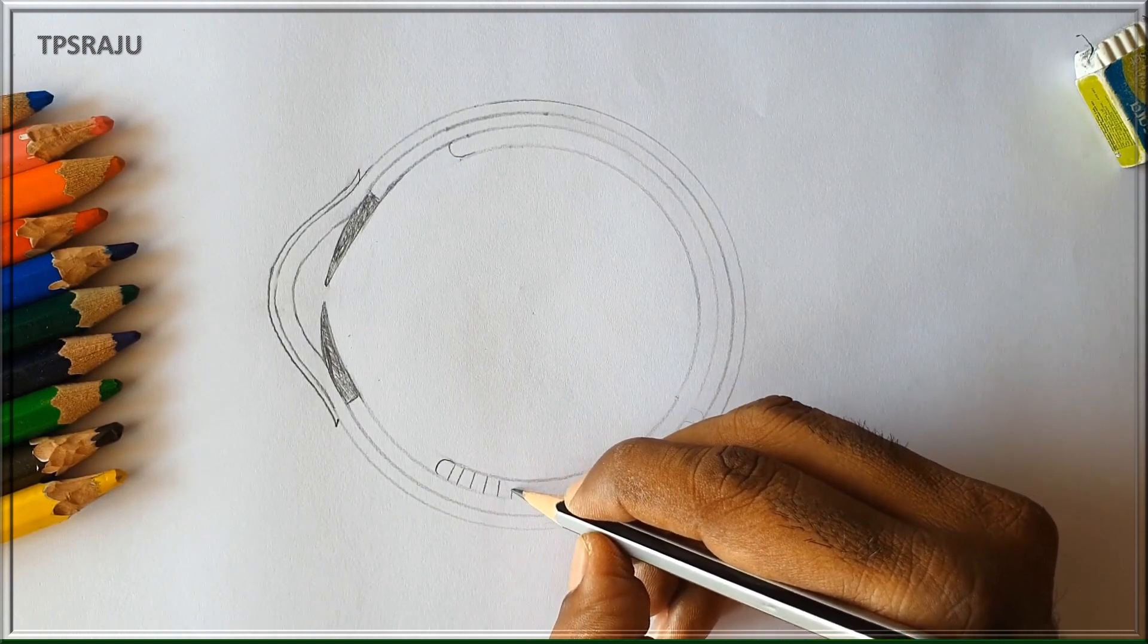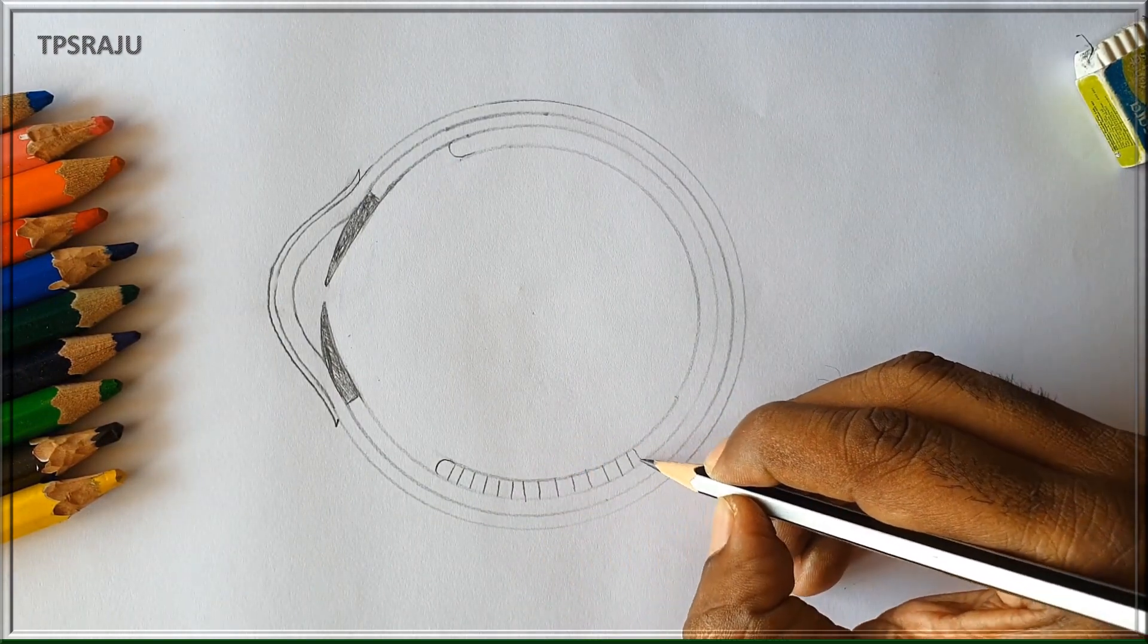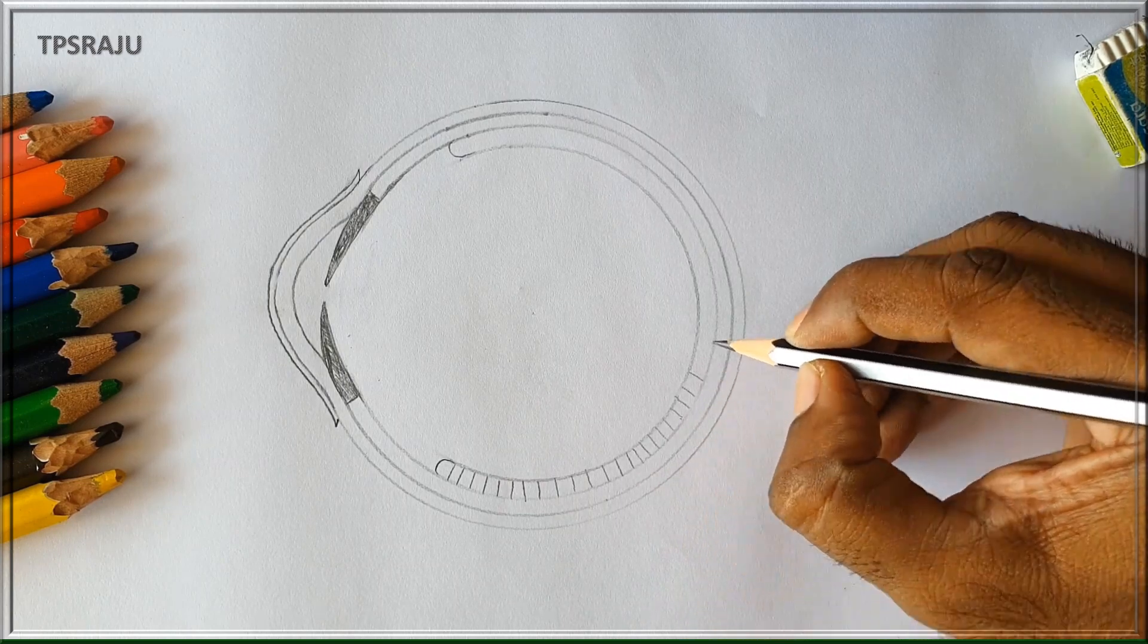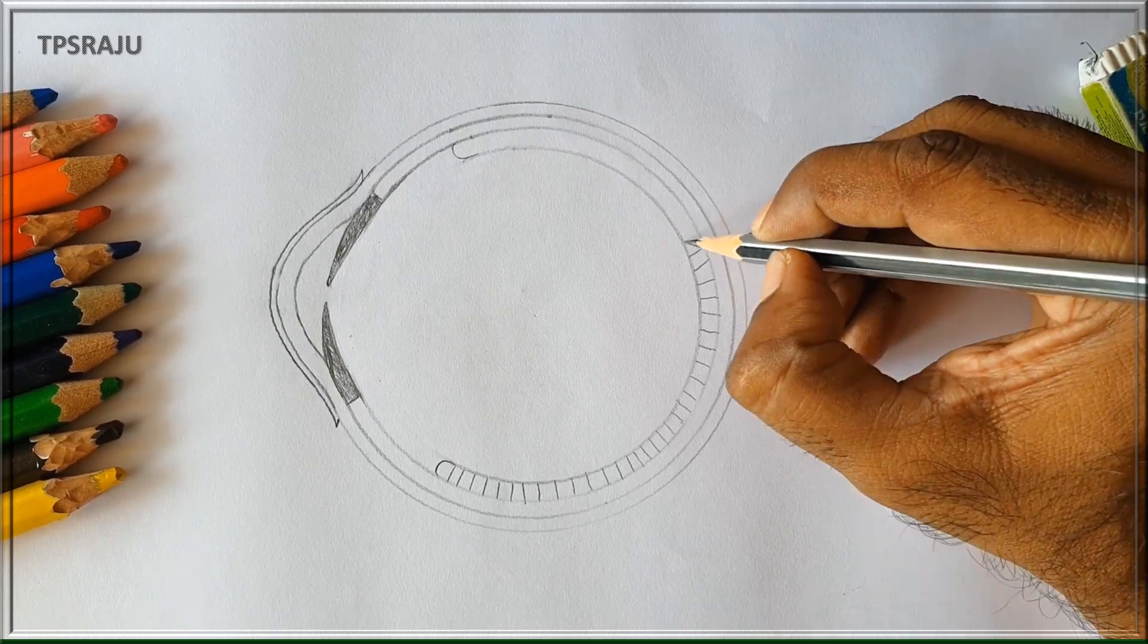The third layer is the netrapattalam, the retina. This is the layer responsible for vision, containing danda kanalu (rod cells) and shenku kanalu (cone cells). Now we are observing these danda kanalu and shenku kanalu.